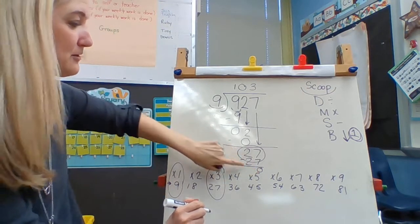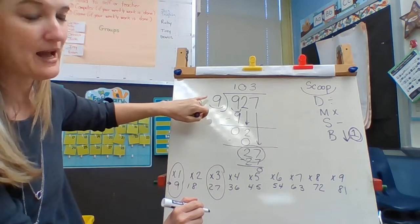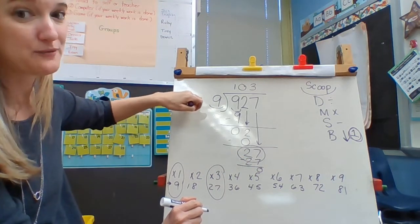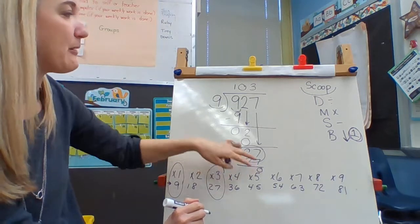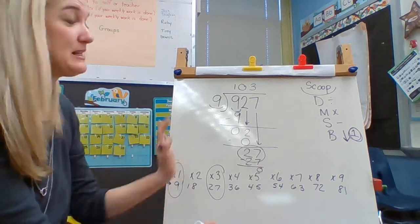Any time my number down here, my remainder, is smaller than my divisor, so here would have to be an 8, 7, 6, 5, 4, 3, 2, 1, or 0, that would be a remainder. So this is actually nothing, so there's no remainder. So I don't even need to write anything else.